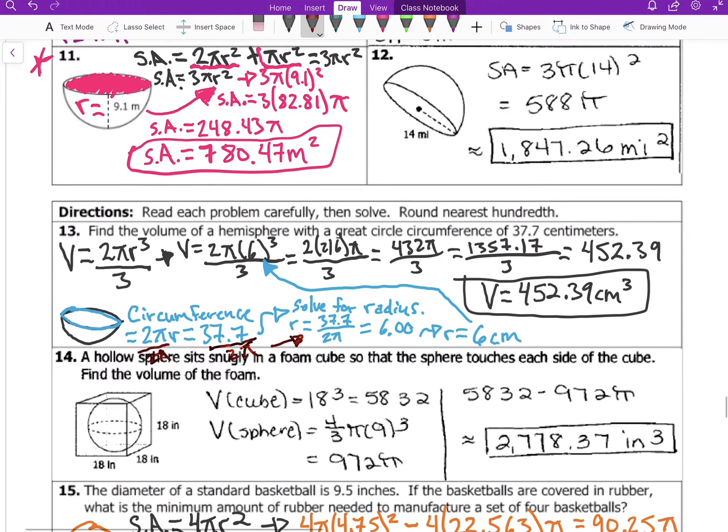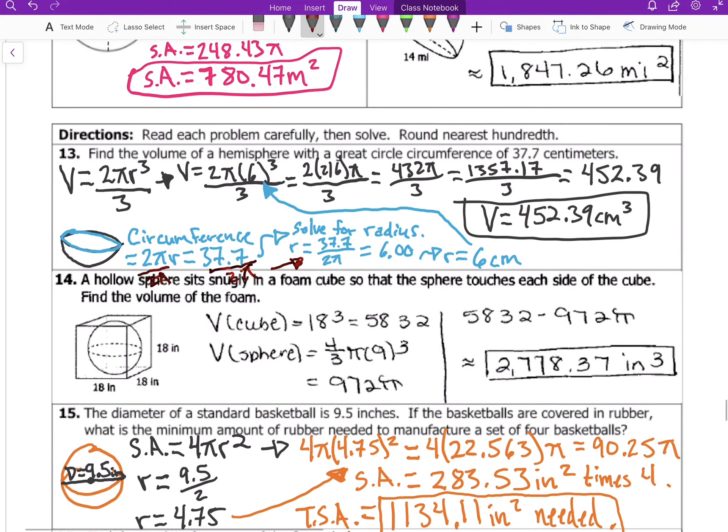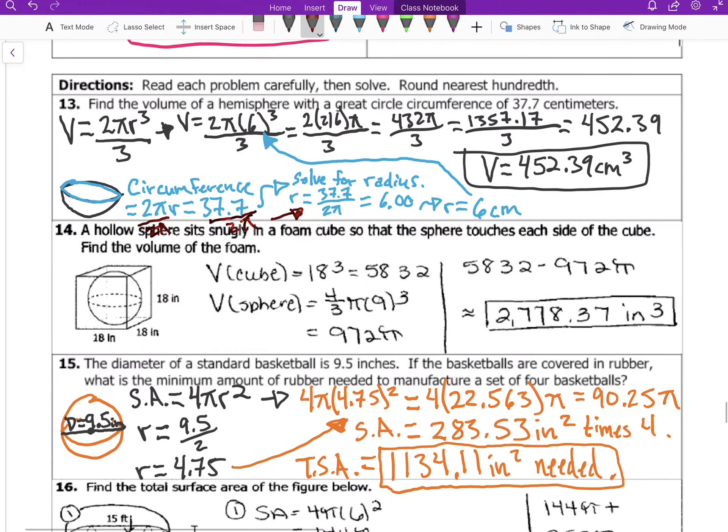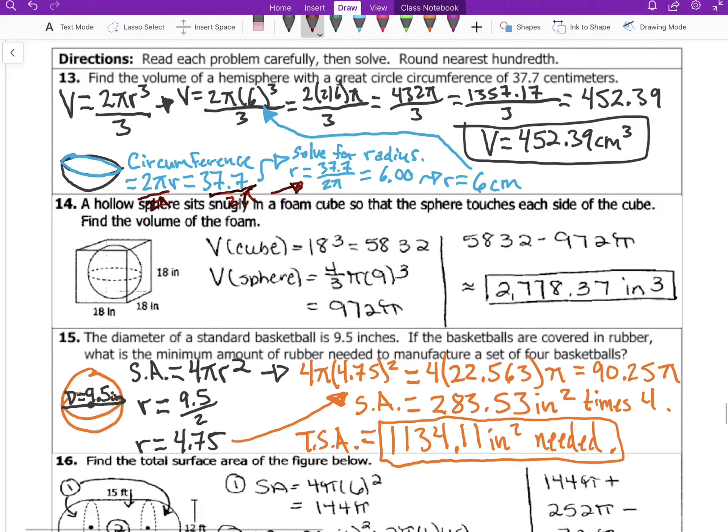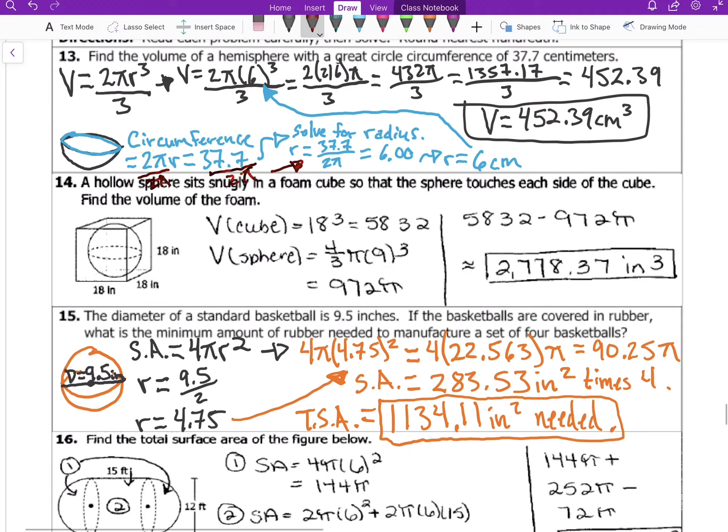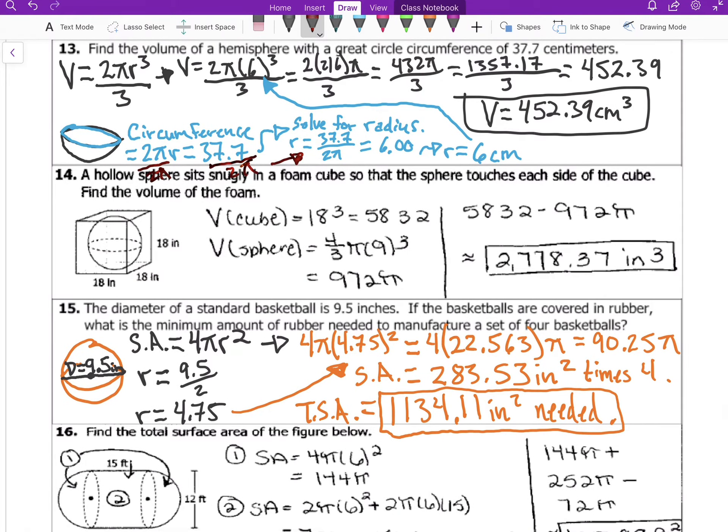Number 15: the diameter of a standard basketball is 9.5 inches. So I wrote it in orange because basketballs are orange, unless it changed colors in the last 20 years. If the basketballs are covered in rubber, what is the minimal amount of rubber needed to manufacture a set of four basketballs? So our basketballs are going to be four of them, so we have to multiply by 4 at the very end. So we just do the surface area of a sphere and then at the end we multiply by 4.